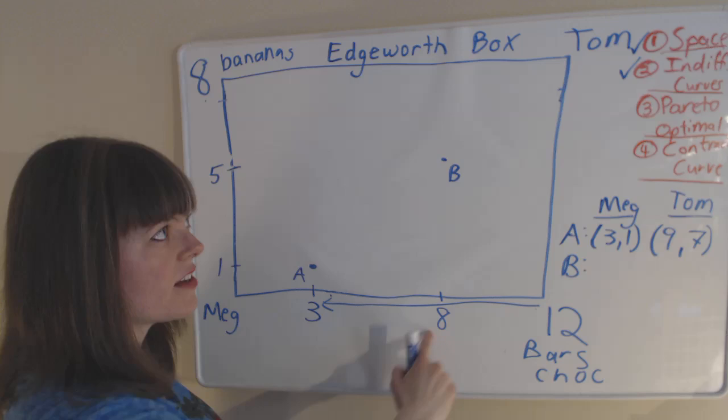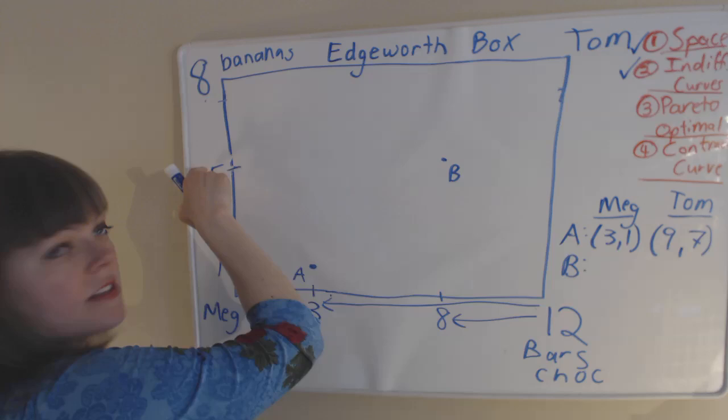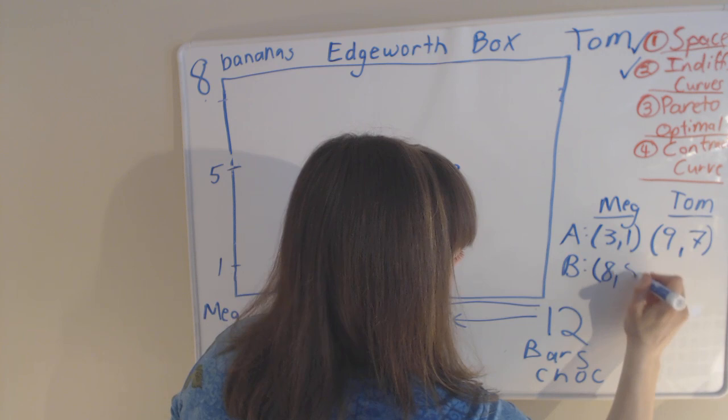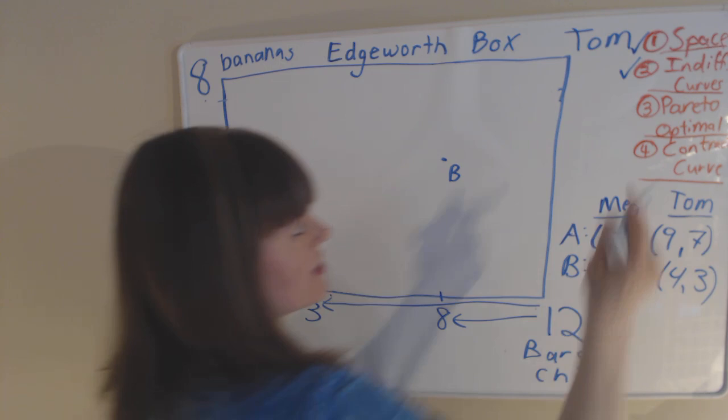Point B represents Meg getting eight bars of chocolate, meaning Tom gets the remaining four bars of chocolate that there are. And Meg, at this point B, gets five bananas. So Tom gets the remaining three bananas. So for this point, which is eight five for Meg, it's going to be four three for Tom. So that's how we understand the space.